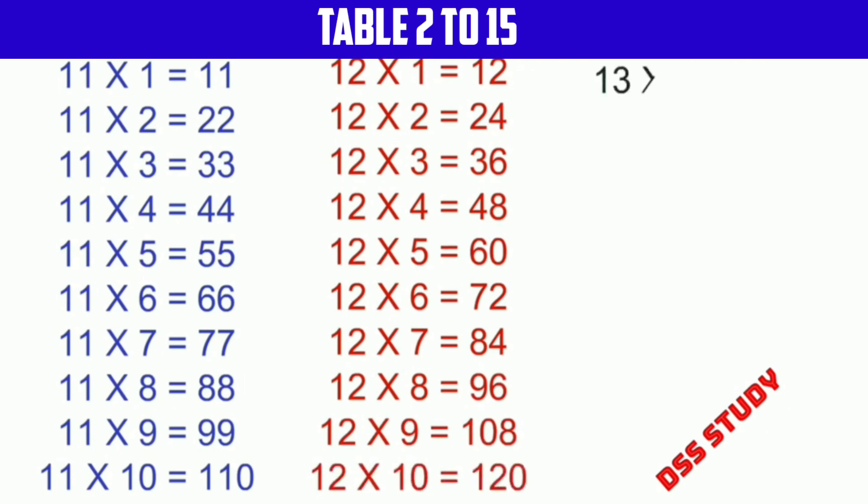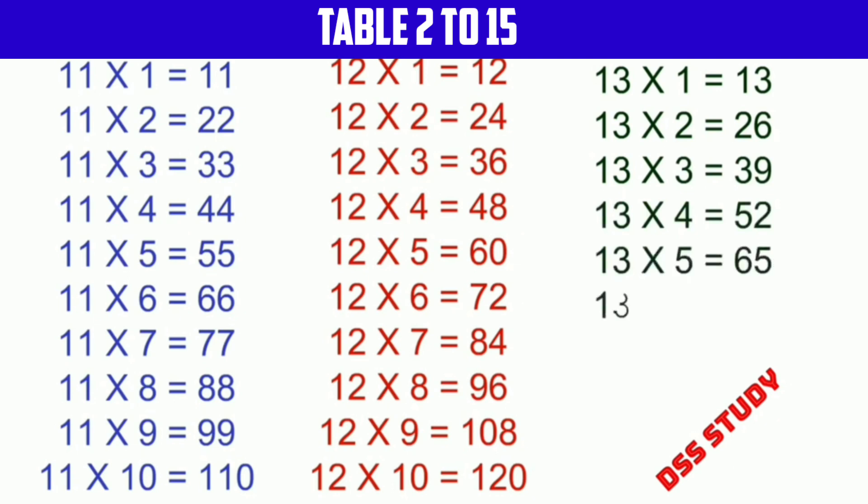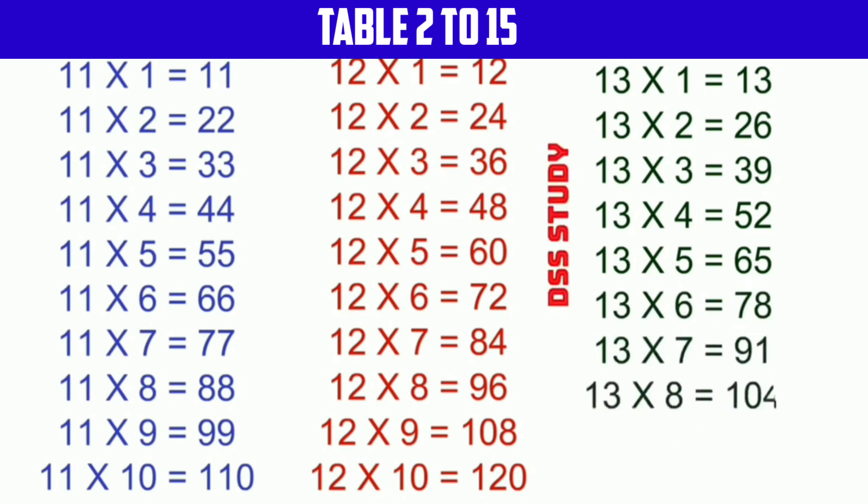13 times 1 is 13, 13 times 2 is 26, 13 times 3 is 39, 13 times 4 is 52, 13 times 5 is 65, 13 times 6 is 78, 13 times 7 is 91, 13 times 8 is 104, 13 times 9 is 117, 13 times 10 is 130.